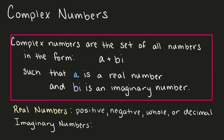As we know, we can only take square roots of positive numbers. So as soon as we take a square root of a negative number, specifically the square root of negative 1, we get imaginary numbers. So i represents the square root of negative 1, and i squared is equal to negative 1.